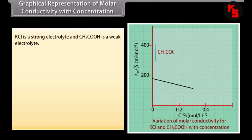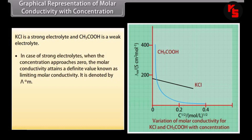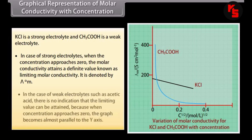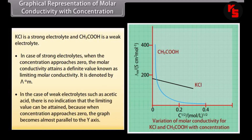Graphical representation of molar conductivity with concentration. KCl is a strong electrolyte and CH₃COOH is a weak electrolyte. The graph shows the variation of molar conductivity with concentration. For strong electrolytes, when the concentration approaches zero, molar conductivity attains a definite value known as limiting molar conductivity, denoted by λ°_m. For weak electrolytes such as acetic acid, there is no clear indication that the limiting value can be attained, because when concentration approaches zero, the graph becomes almost parallel to the Y-axis.